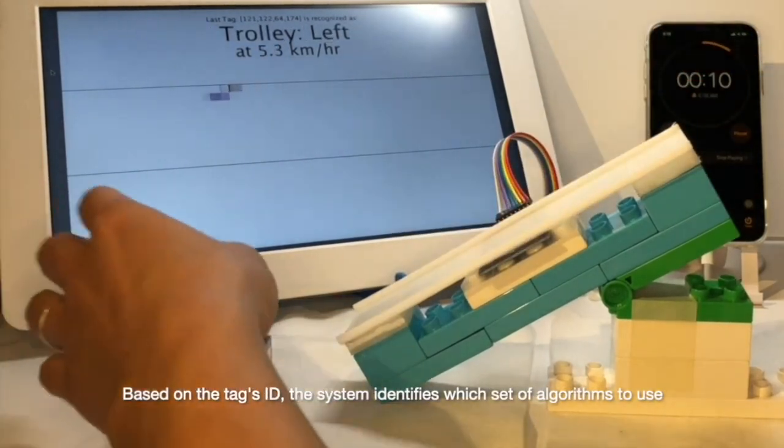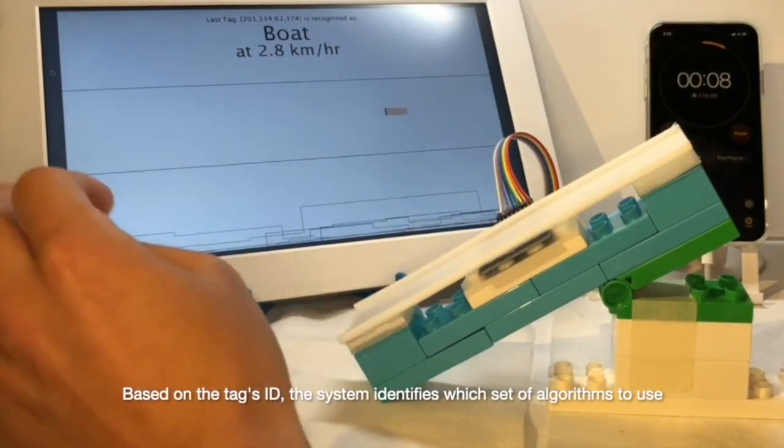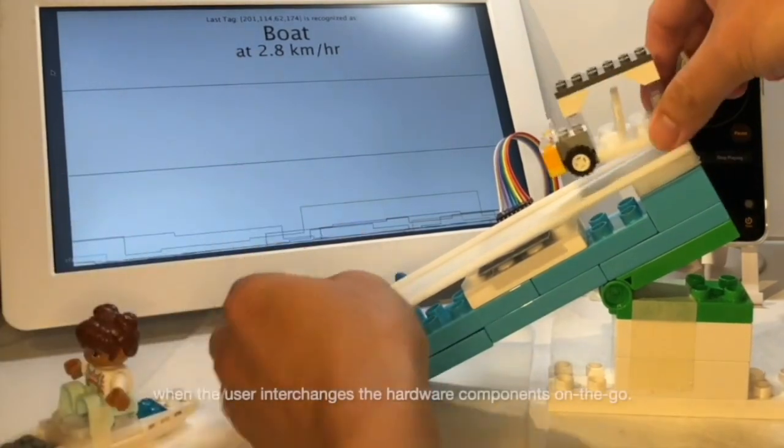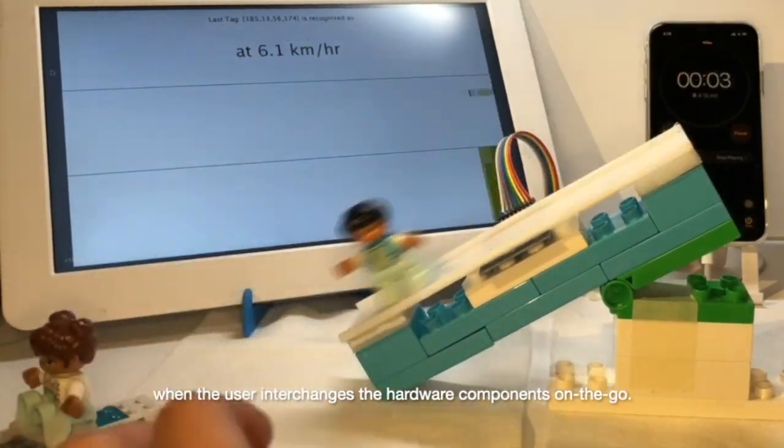Based on the tag's ID, the system identifies which set of algorithms to use when the user interchanges the hardware component on the go.